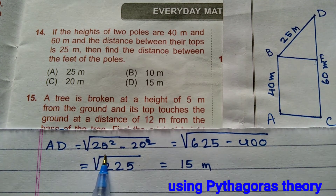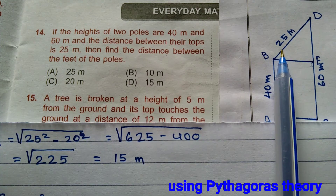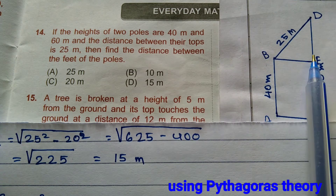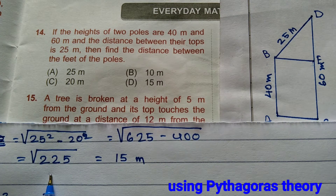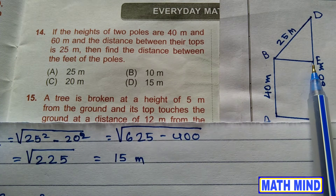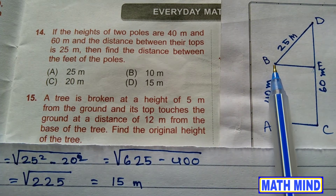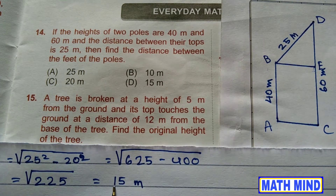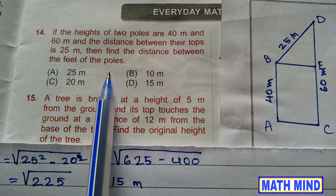25 squared minus 20 squared — hypotenuse squared minus height squared — equals the square root of 625 minus 400, which is the square root of 225, equal to 15 meters. Hence BE equals 15 meters. Since ABEC is a rectangle, BE equals AC equals 15 meters. Option D is correct. The distance between the feet of the poles is 15 meters.